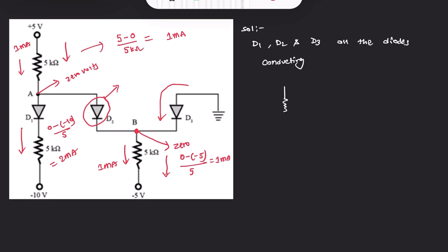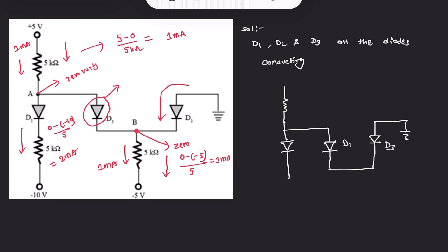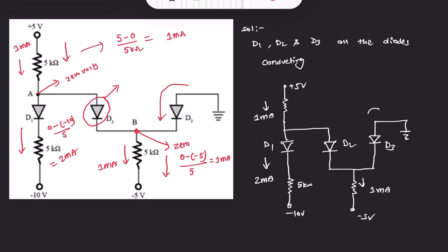Let's redraw the circuit with all diodes conducting. The circuit shows D2 and D1 with +5V, -10V, and -5V sources and 5 kΩ resistors. The current through D3 is 1 mA, the current through D1 is 2 mA, and we don't yet know the current through D2.